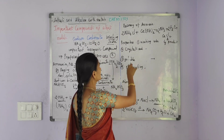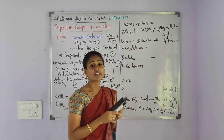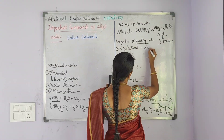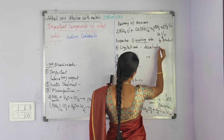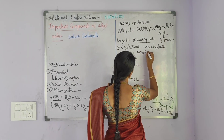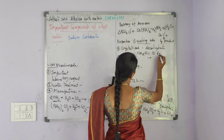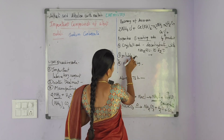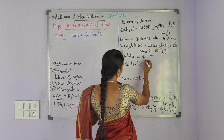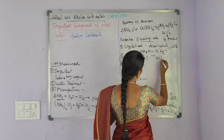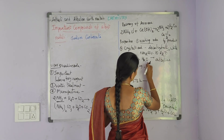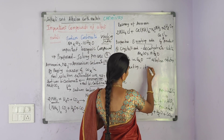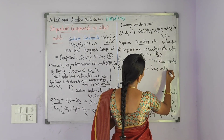Next we will move to the properties of sodium carbonate. Sodium carbonate is commonly called washing soda. Sodium carbonate crystallizes as the decahydrate, Na2CO3·10H2O. This decahydrate is white in color. Sodium carbonate is soluble in water and forms an alkaline solution. On heating, it loses its water of crystallization.